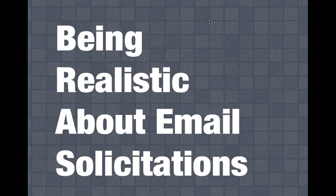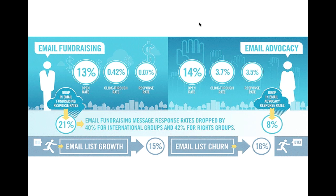Let's look at a few key numbers when we're talking about email. This comes from the M+R e-benchmarks, which we use as our benchmarks when we look at campaigns. The email fundraising open rate is around 13% overall. So if you send an email solicitation and it's opened by 13% of your email list, you're doing pretty good. You might have higher rates — 18% to 20% — for email newsletters, but in general what we see with our clients is roughly around that 13%.